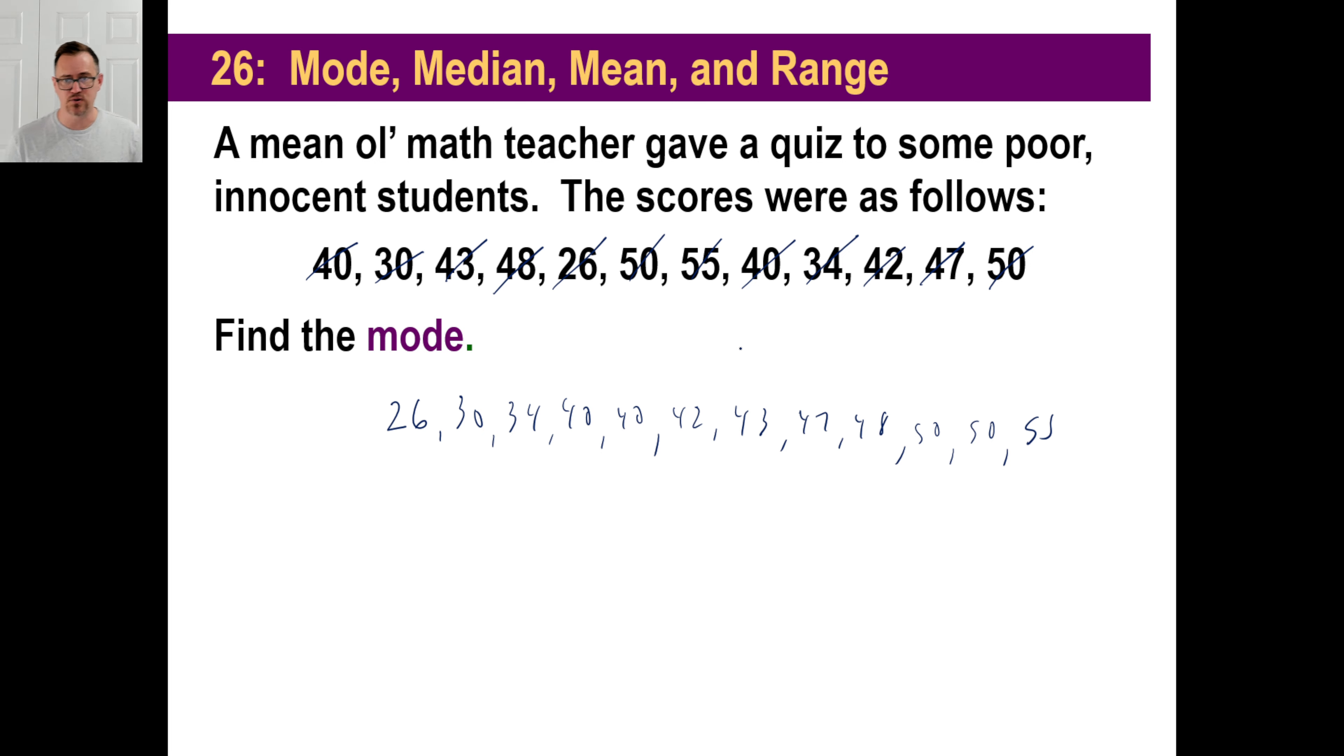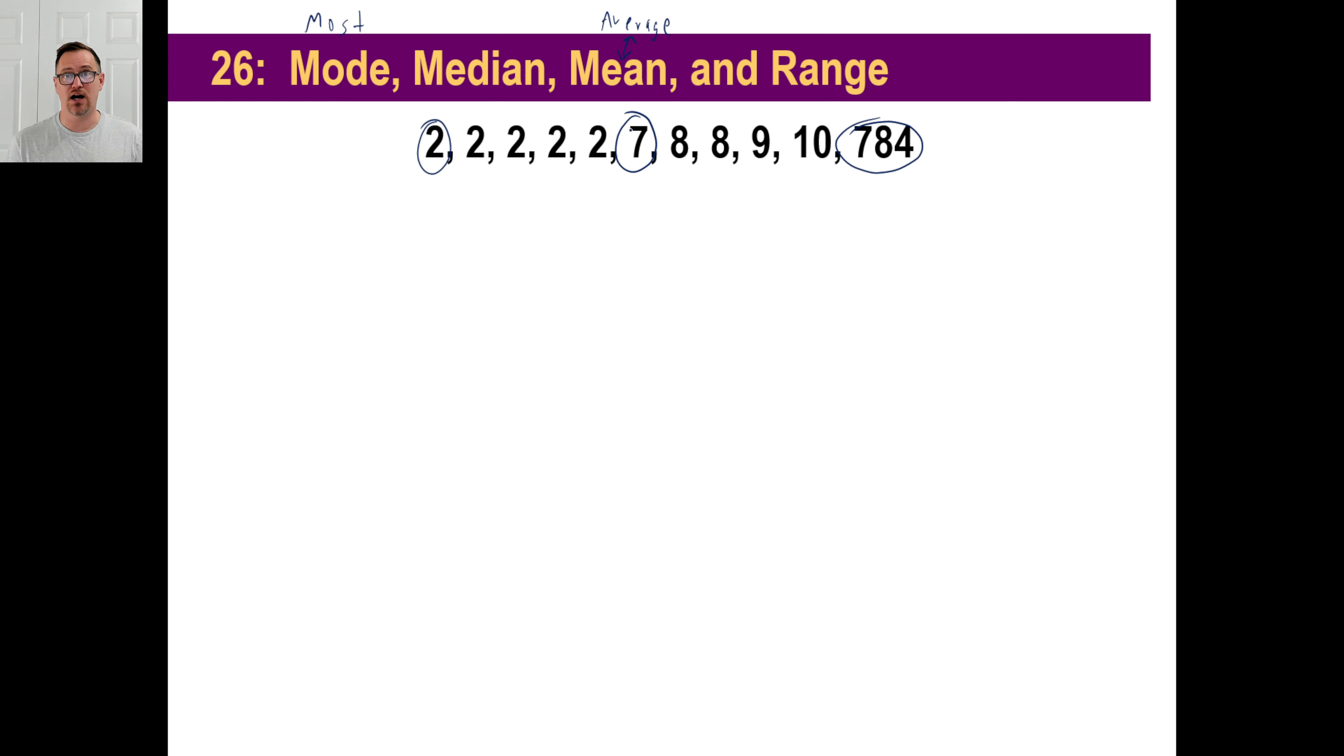Now the mode, which one occurs the most? Look there. There's two 40s and there's also two 50s. So you would have to say that the mode is both of those. It's 40 and 50. And the next question is, what's the median? And this is where it gets a little weird. In the last one we saw, we had 11, an odd number of numbers. So we can tell that there would be an even number on both sides and we could just pick the one in the middle.